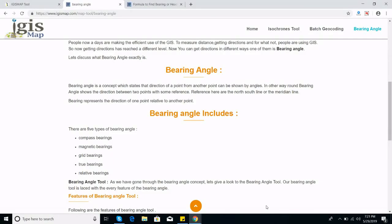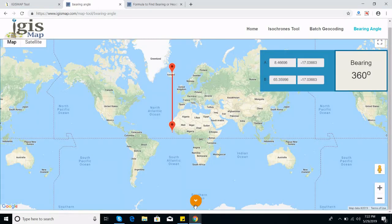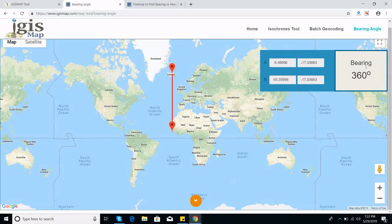Bearings are measured clockwise from north, so north is zero degrees. It is the number of degrees in the angle measured in a clockwise direction from the north line. Now on the bearing angle tool here, you can see two points. These are the lat longs of two points, and this is the bearing angle of 360 degrees between these two points.